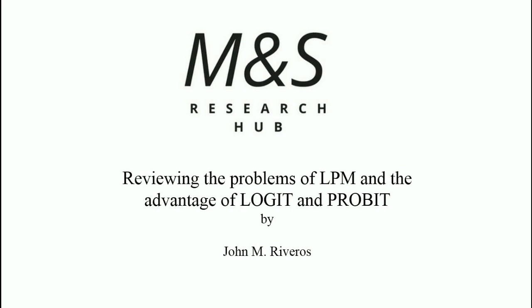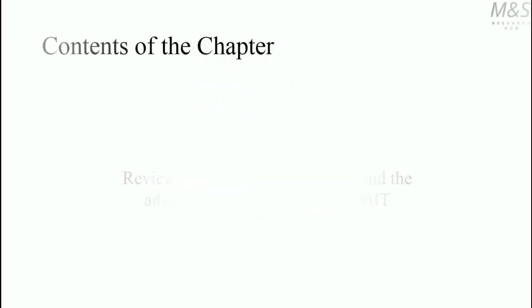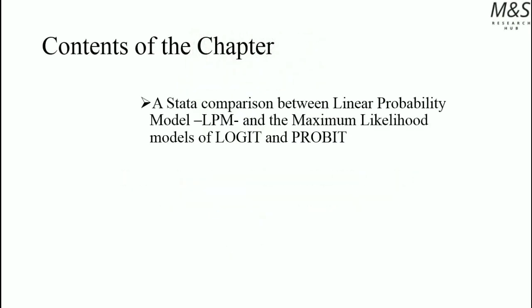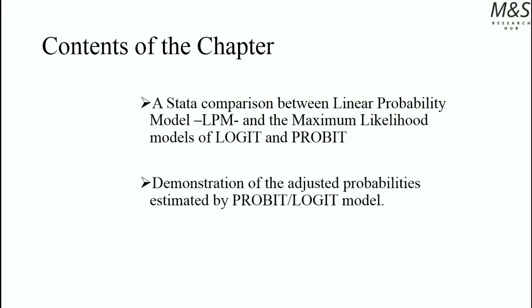Welcome to the fifth chapter of the course on Propensity Score Matching Approach using STATA. The name of the chapter is Reviewing the Problems of Linear Probability Model and the Advantage of Logit and Probit Models. My name is John Riveros and this is an initiative of M&S Research Hub. We're going to review a STATA comparison between the Linear Probability Model and the Maximum Likelihood Models of the Logit and the Probit approximation.